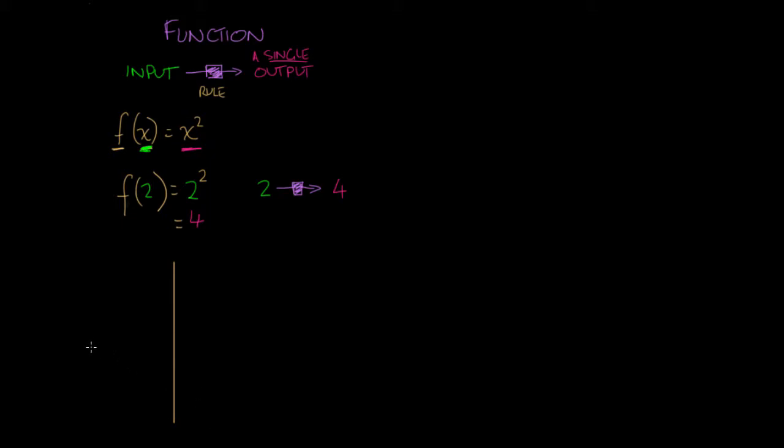So for instance, let's consider the graph of y equals x squared. So y equals x squared will look something like this. We'll call this y equals x squared, where this is our x axis, and this is our y axis. So this graph here represents a rule. What it does is it says, if you give me some x value, I will give you a corresponding y value.